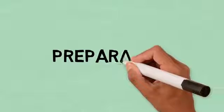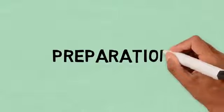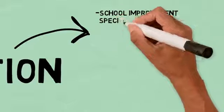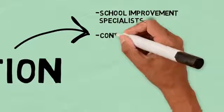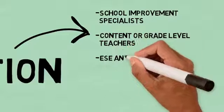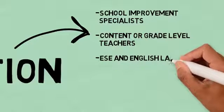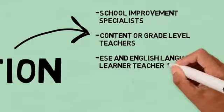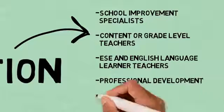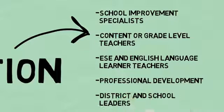Step 1 is Preparation. Begin by building the team that will work through the self-study process. The team may include school improvement specialists, content or grade level teachers, exceptional student education and English language learner teachers, as well as those involved in professional development and leaders at the district and school level.